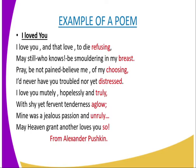The poet is Alexander Pushkin. If you look at the above poem, it's a poem about love. It talks about a lover who still loves their ex-girlfriend and still wants to grant her another love. In the poem, we have rhyming last words such as 'refusing' and 'choosing,' and other rhyming words such as 'truly' and 'unruly,' which form a rhyming scheme.